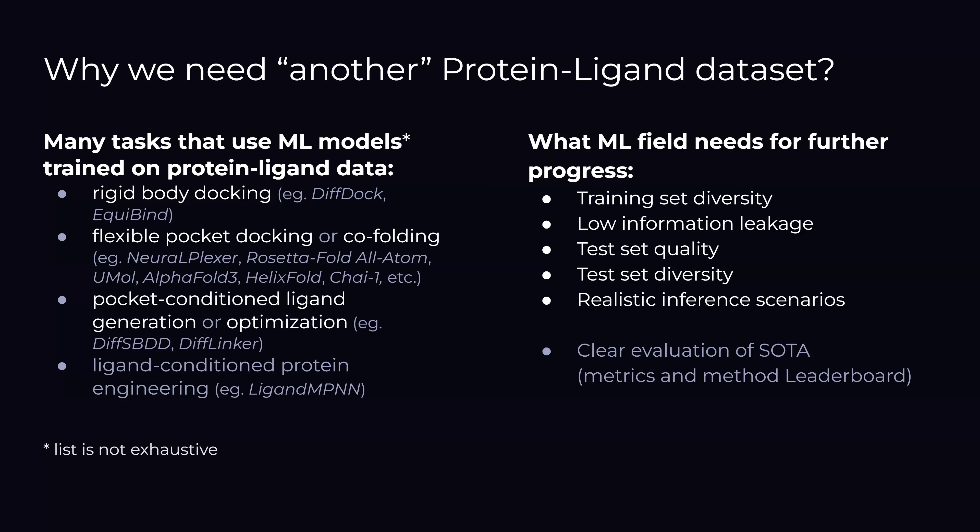What we identified is that a few things are missing. We believe, in order to progress, we need to improve on training set diversity, minimize information leakage between training and test sets, ensure test set quality has a very profound effect on evaluation, and make sure the test set is diverse — if we only predict the same kind of molecules, it won't tell us much about generalizability. Finally, not least important, is having realistic inference scenarios, as most studies are still limited to re-docking to exactly the same receptor.